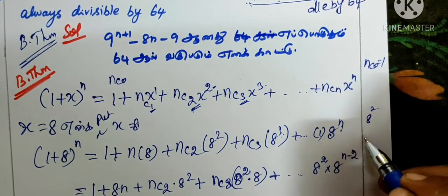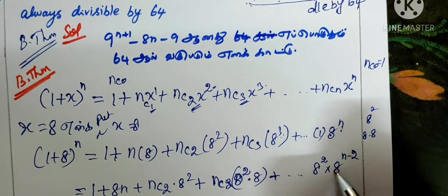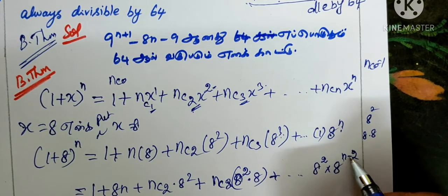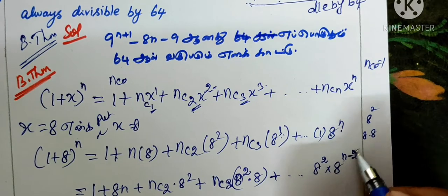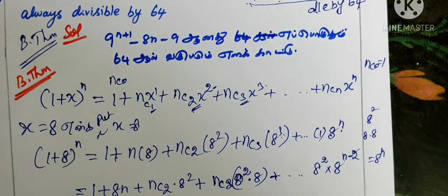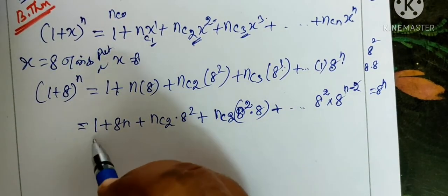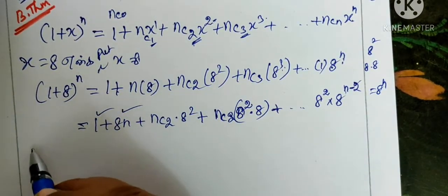8 squared is 64. Then 8 squared times 8 power n-2. So here 1, 8, and 8 equals 8. Then we have n-2. In this way, plus 2 minus 2 is 8n. Then we have n. We have these terms.